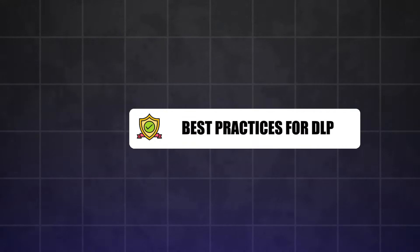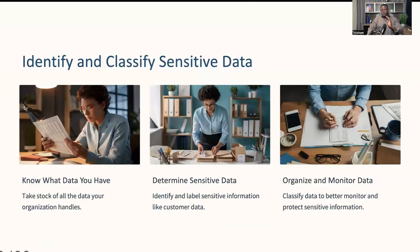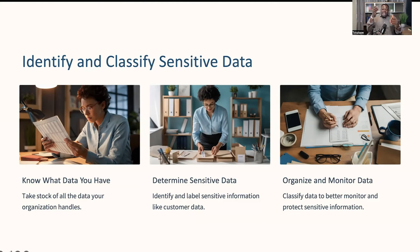Now, it's time to check out some best practices for implementing DLP effectively. These steps will help ensure that your data protection strategy is robust and efficient. The first step is to start by identifying and classifying sensitive data — taking stock of all the data your organization handles and determining which pieces are sensitive. For example, personal customer information or proprietary business data. By labeling and organizing this data, you can better monitor and protect it.